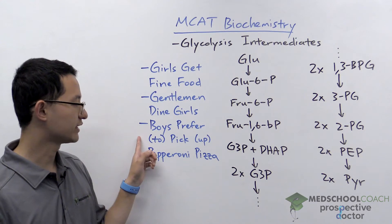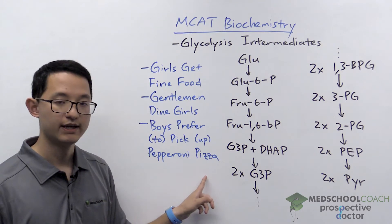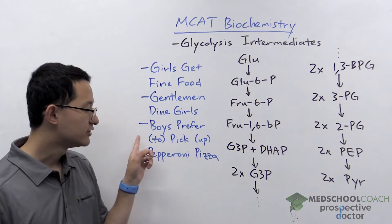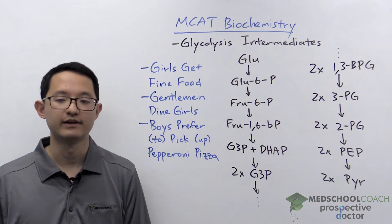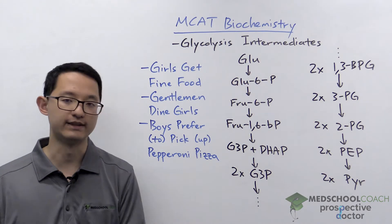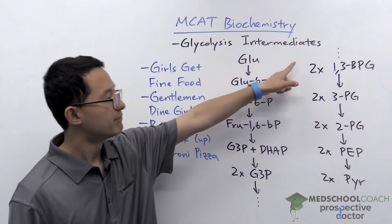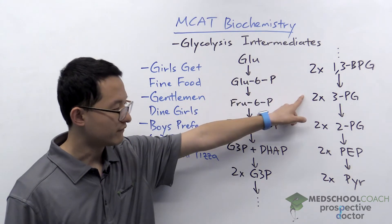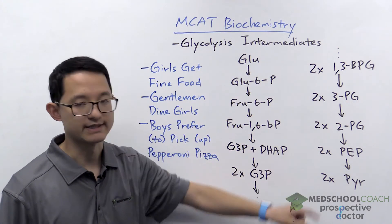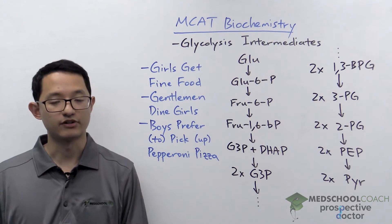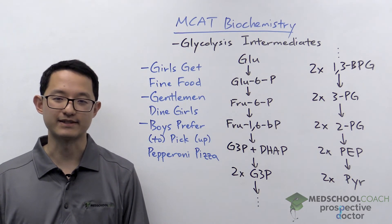Finally we have "boys prefer to pick up pepperoni pizza." Note that "two" and "up" aren't part of the mnemonic — they're just there to help fill in the sentence. So we can see here: boys prefer to pick up pepperoni pizza. That's our mnemonic for memorizing the intermediates of glycolysis.